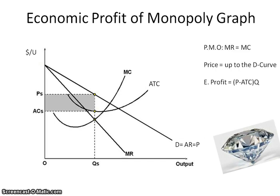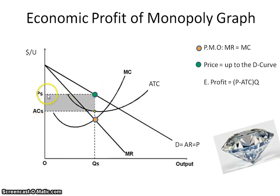When talking about the different formulas for economic profit, the first thing we have to find is the profit-maximizing output, which is where MR equals MC. In order to figure out the price, you take it up to the demand curve, and that gives you the price the monopoly will choose.